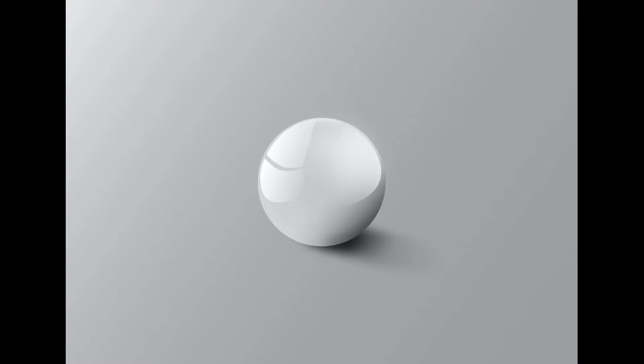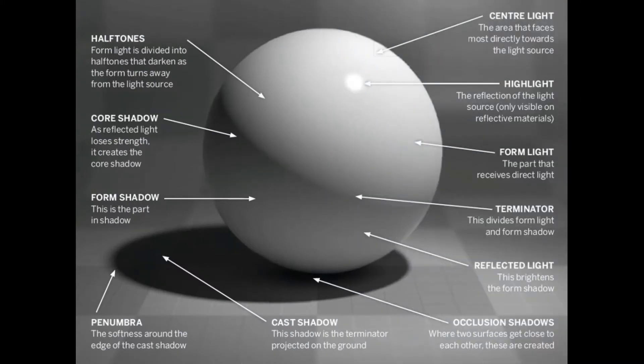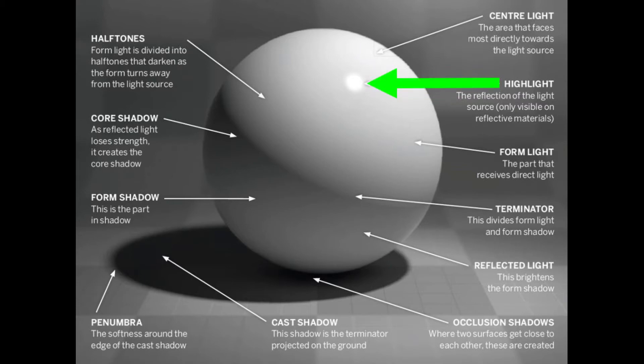Let's take a look at this simple ball with one light source to better understand how value creates volume. You could simplify this image into a four-value notan, but let's take a closer look. One of the lightest values will be the center light area — if this were a face, it would be the part of the face that has the most direct light hitting it. Next, you see the highlight. For instance, if this were a portrait, it would be on the tip of the nose to one side.